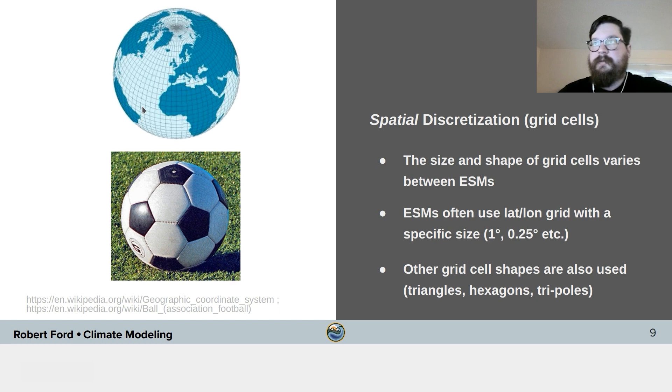The simplest grid, which you likely encountered earlier this week, is a grid constructed from evenly spaced latitude and longitude lines, like what is shown in the figure on the top here. Some ESMs do use this type of grid with some resolution, for example, one degree or a quarter degree, but others have more complex grids.